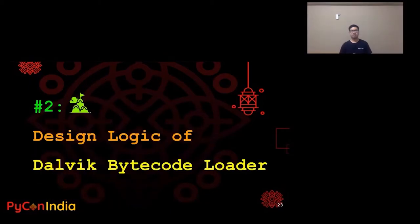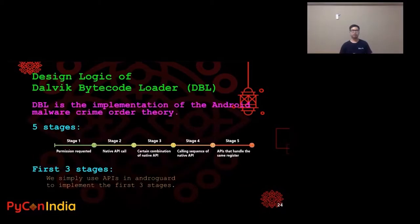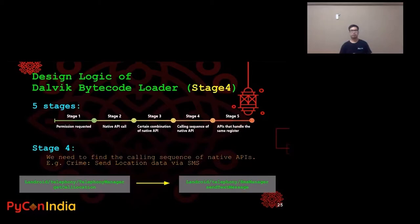Now let's talk about the design logic of the Dalvik Bytecode Loader. Our Dalvik Bytecode Loader is actually the implementation of the Android malware crime order theory — we implement every stage of the theory. There are five stages. The first three stages are easy; we simply use the API from another open source tool, AndroidGuard, to implement those first three stages.